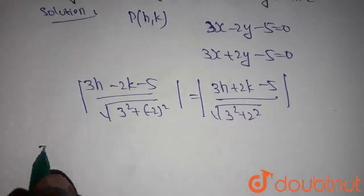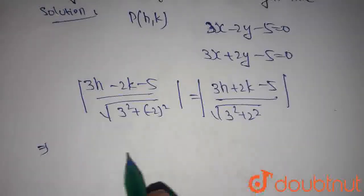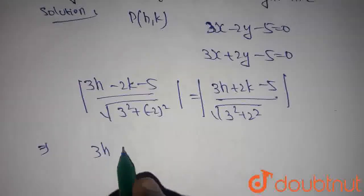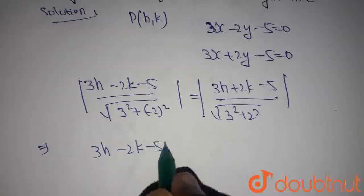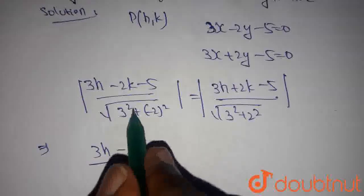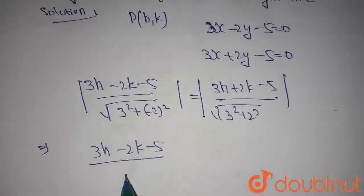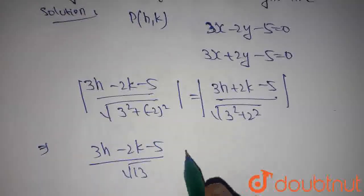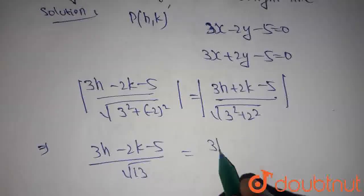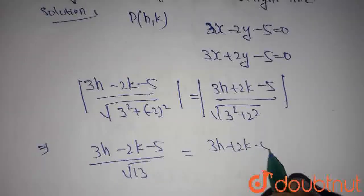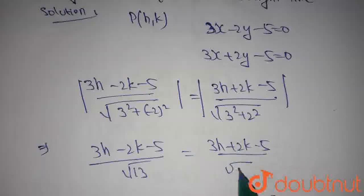Let's consider these two signs as positive signs. Then we get (3h-2k-5)/√13 = (3h+2k-5)/√13, where 3²=9, 2²=4, giving us √13 here.